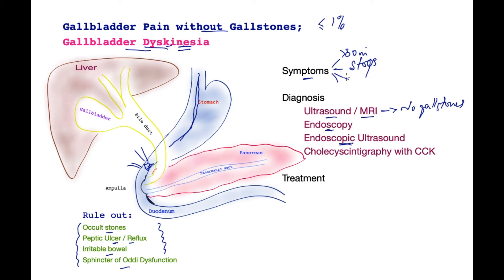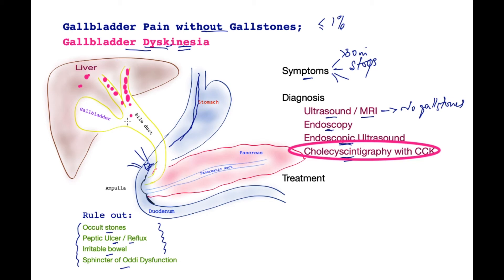Once the patient has typical symptoms and none of the investigations reveal gallstones or occult gallstones, the next step is cholecystography. When patients are fasting, they are given a dose of a dye labelled with a tiny dose of radioactivity. This dye concentrates in the liver, travels down into the bile tube, and — provided the cystic duct is patent — gets concentrated in the gallbladder. After a period of time, a naturally occurring hormone called cholecystokinin (CCK) is administered, causing significant contraction of the gallbladder and causing the dye to be excreted.